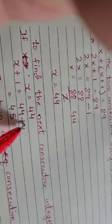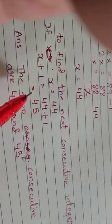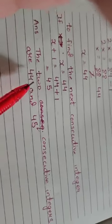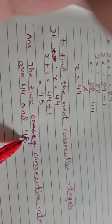be obviously 44 plus 1, so that gives us 45. So we got the two integers. The two integers are 44 and 45. Hope you understood and it's easier now.